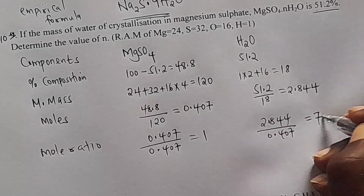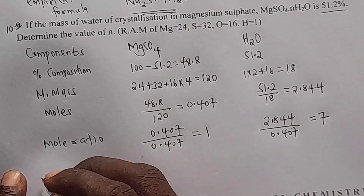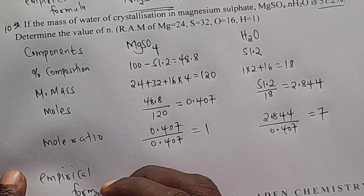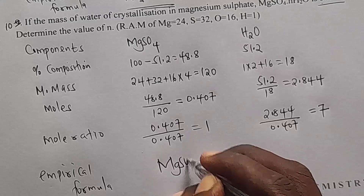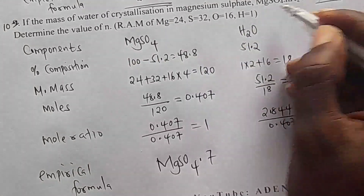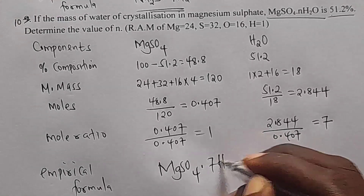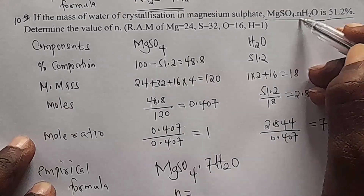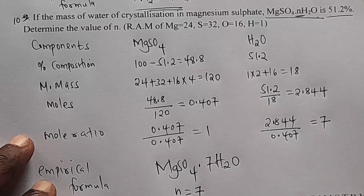We round 6.99 to 7. So the empirical formula will be magnesium sulfate·7H₂O. To get the value of n, we check: 7 of water means n is 7. The value of n is 7.